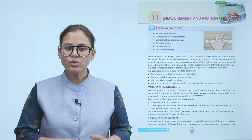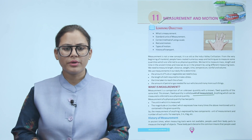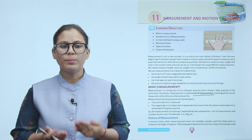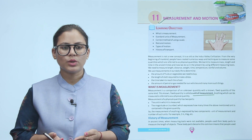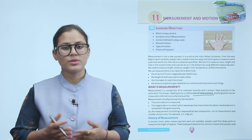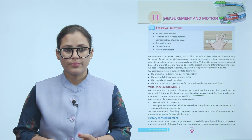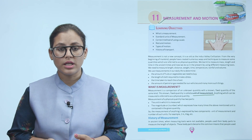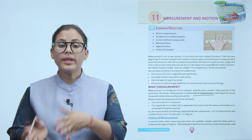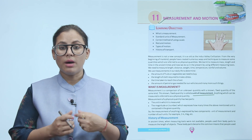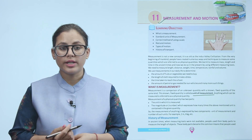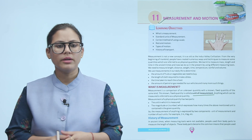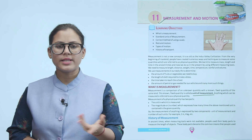So the measurement of anything is expressed by two components: units of measurement and number of such units. For example, two meters, four kilograms, etc. The two parts are: first, the unit in which it is measured; and second, the magnitude or number expressing how many times the unit is contained in the given quantity.